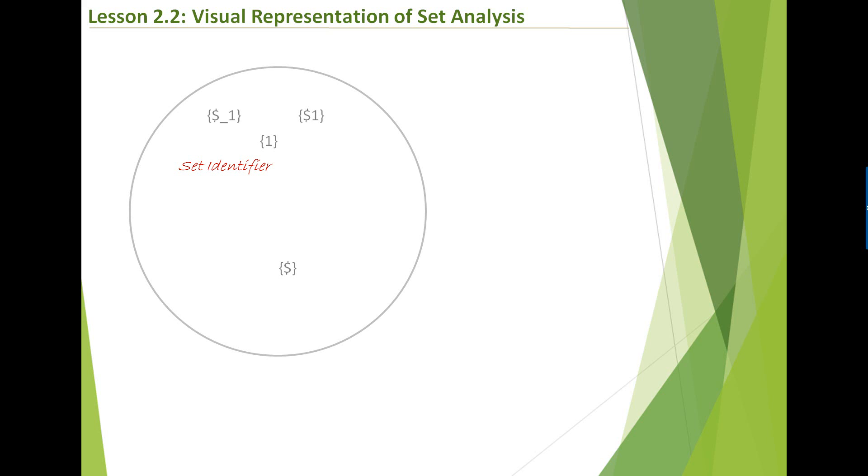And then this is an interesting one. This is like forward selection or the next selection. You don't know what the selection is, but whatever the selection user is going to make, you're going to take that set. Dollar underscore one is primarily used for some kind of what-if analysis scenarios. Dollar underscore one is the next selection, opposite of dollar one which is the previous selection.